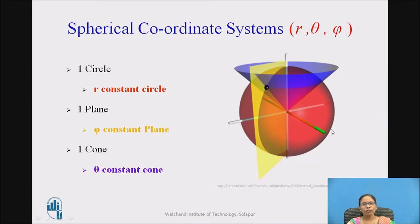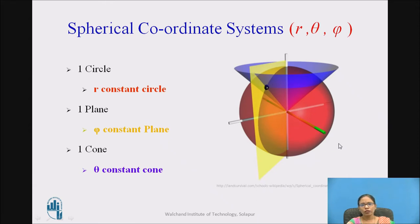The spherical coordinate system consists of one circle, one plane, and one cone. One circle is the r-constant circle shown here. One plane is the phi-constant plane, shown in yellow color. One cone is the theta-constant cone, shown in violet color. So one circle, one plane, and a cone together form the spherical coordinate system having coordinates r, theta, phi.